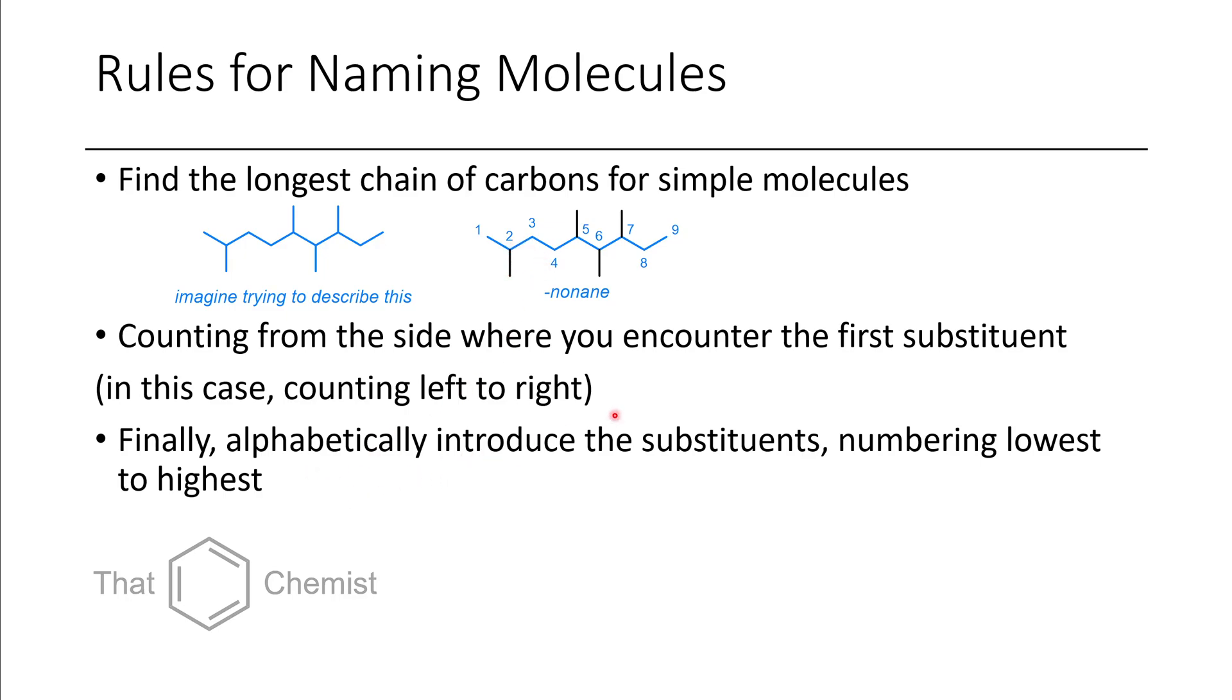Finally, when you're listing substituents on alkanes, you want to list them in alphabetical order, the same way that we did for the benzene ring. Here you can see we have two, five, six, seven, tetramethyl nonane.